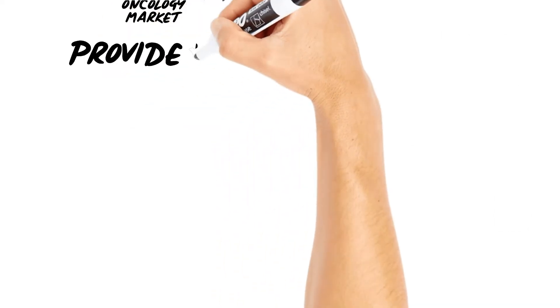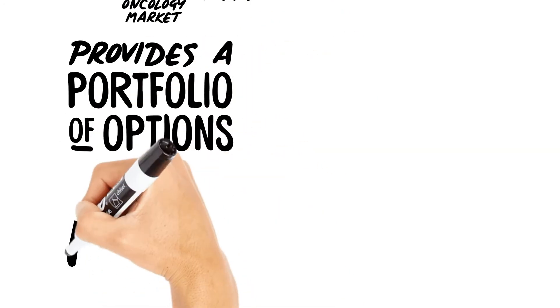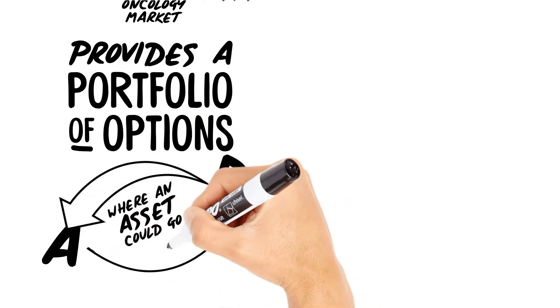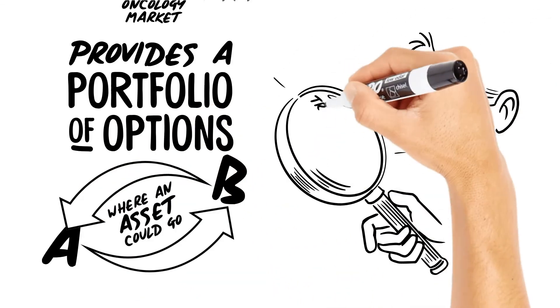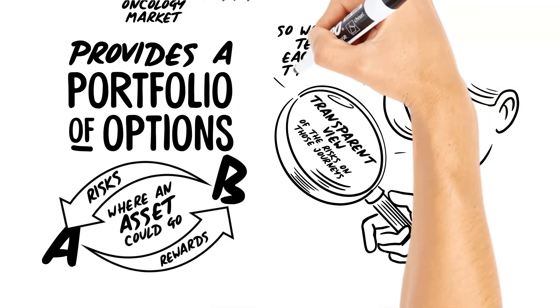5x provides a portfolio of options which cover where an asset could go, so we have a range of market positions, understanding what a market might want, what might be approvable, what the product could be, how it could get to those destinations to connect A and B, and a transparent view of the risks on those journeys and the opportunities if successful, so we're all telling each other the truth.